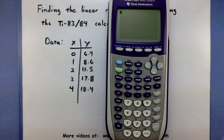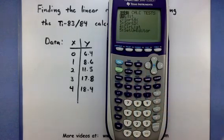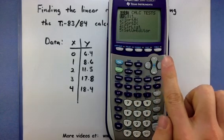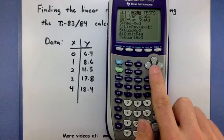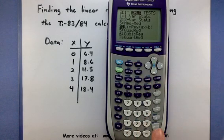Now that all the data is stored safe and sound, let's make the calculator find this regression line. Again, go to Stat, but this time use your right arrow to highlight the Calc menu. This will bring up lots of different options. We want the fourth option on the list that says LinReg, or Linear Regression. So I'm going to highlight that and press Enter.